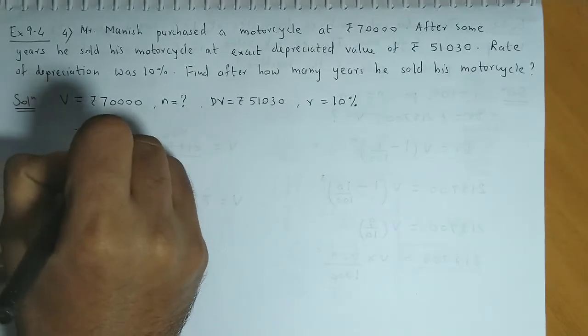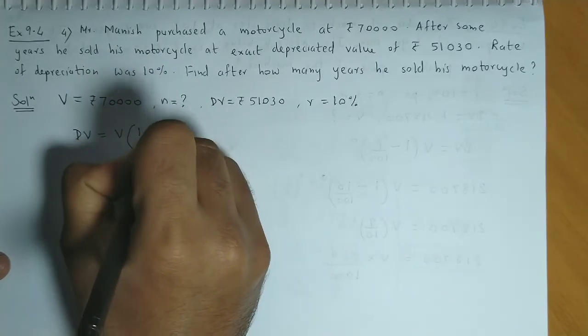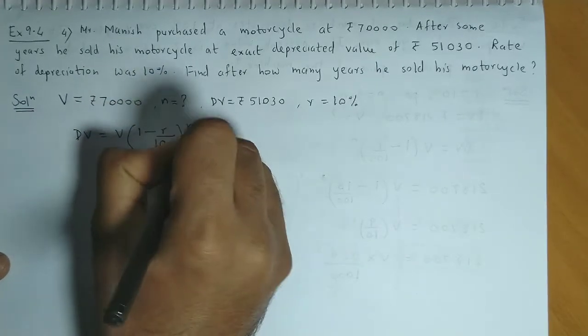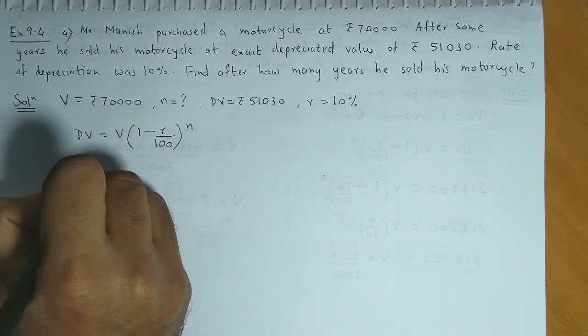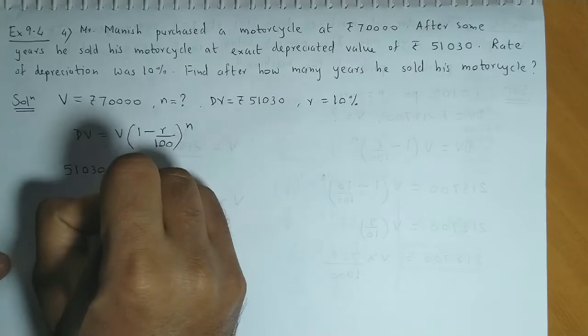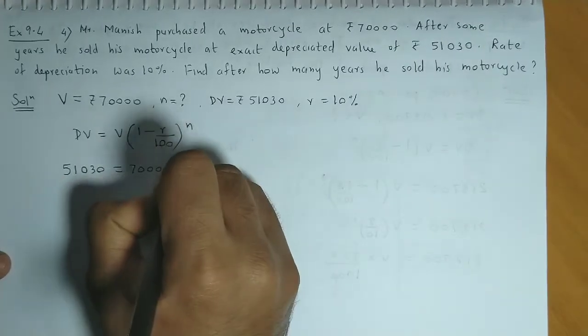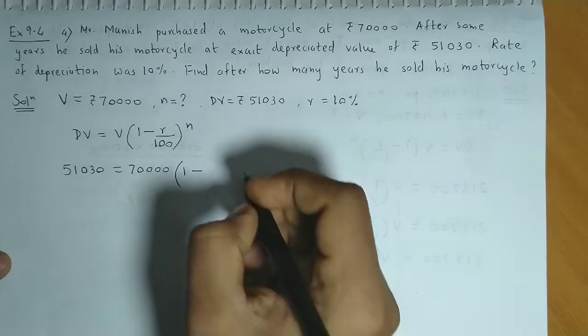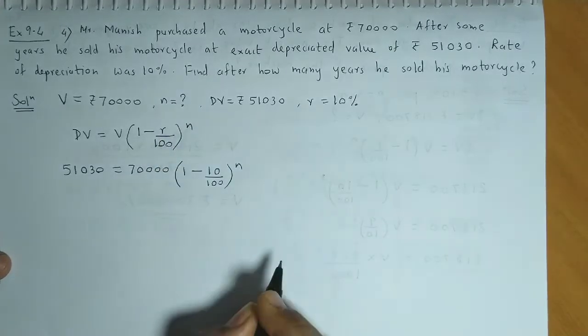Now, we know that DV is equal to V times 1 minus R upon 100 raised to N. Depreciated value hai 51,030. Present value hai 70,000. To V ki value 70,000, 1 minus R upon 100 raised to N.